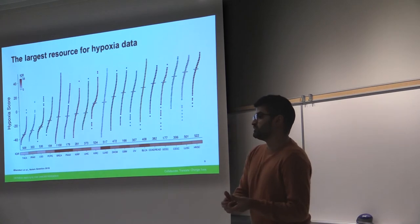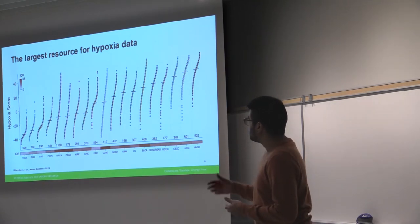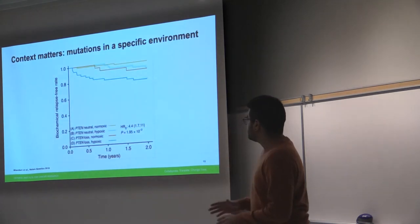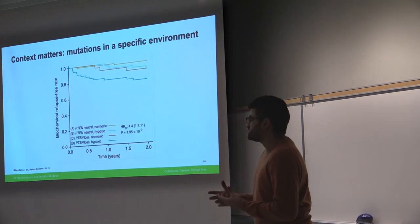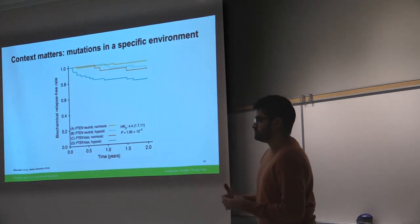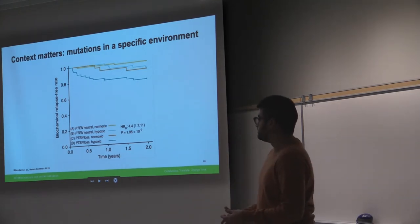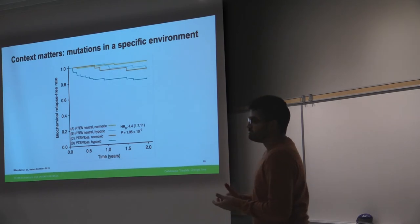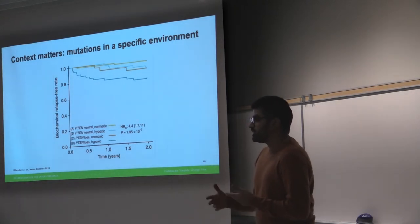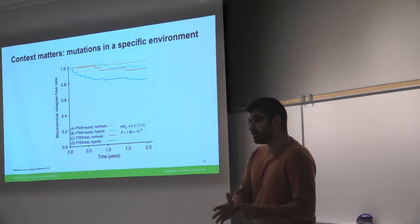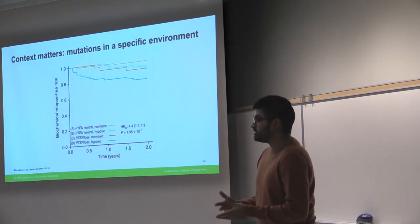And then we did some more interesting stuff where we can then start to look at multiple things at once. So here we're showing that it actually matters the context of a mutation for a cancer. So here we're looking at PTEN, which is a tumor suppressor gene. And we're showing that if you look at this dark blue group, they're really the patients that have the largest relapse rates. And these are patients that have a specific mutation, but they also have hypoxia. So they also have low oxygen. So just having a mutation might be bad sometimes, but if you look at patients who have a mutation in a specific environment, then that can help you find subgroups that are actually really aggressive.